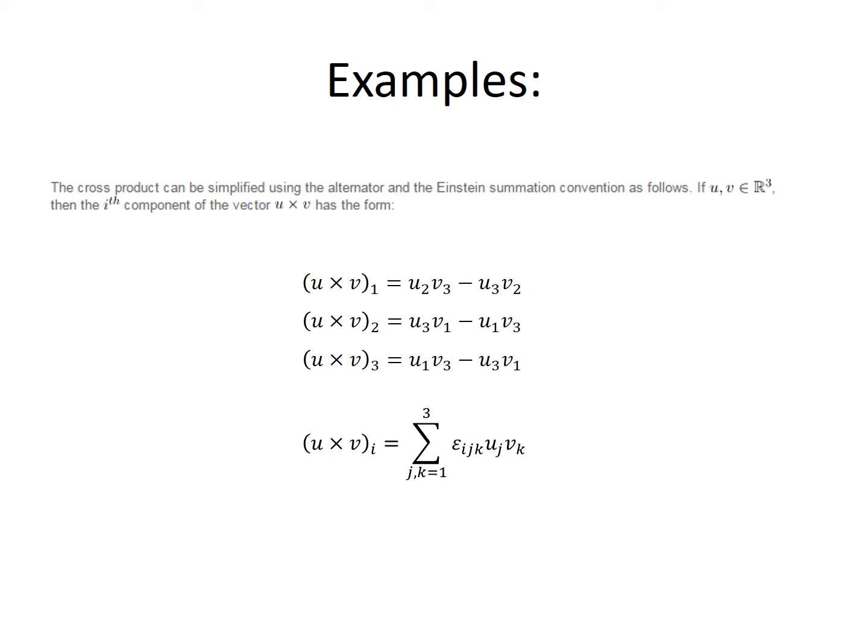We can write a compact form of this general component using the alternator symbol. The component i of u×v is equal to the sum over jk from 1 to 3 of εᵢⱼₖuⱼvₖ. Adopting Einstein's summation convention, we can then drop the sum sign and write that the component i is equal to εᵢⱼₖuⱼvₖ.